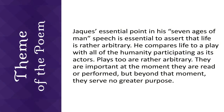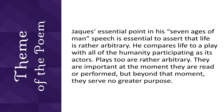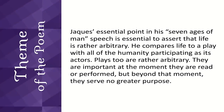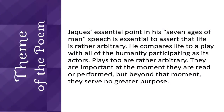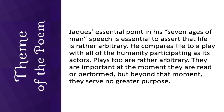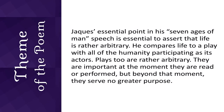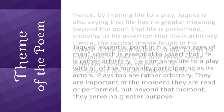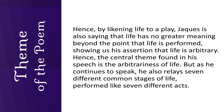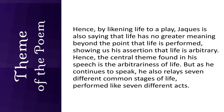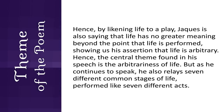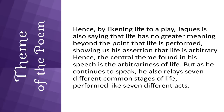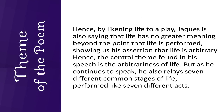Theme: Jaques's essential point in the 'Seven Ages of Man' speech is to assert that life is rather arbitrary. He compares life to a play with all of humanity participating as its actors. Plays, too, are arbitrary — they are important at the moment they are read or performed, but beyond that moment they serve no greater purpose. Hence, by likening life to a play, Jaques is saying that life has no greater meaning beyond the moment it is performed. The central theme is the arbitrariness of life, and he relays seven different common stages of life performed like seven different acts.